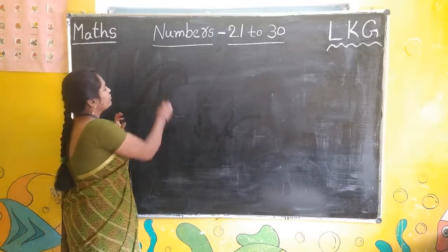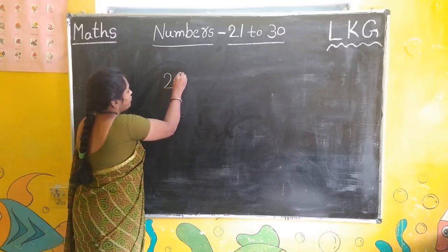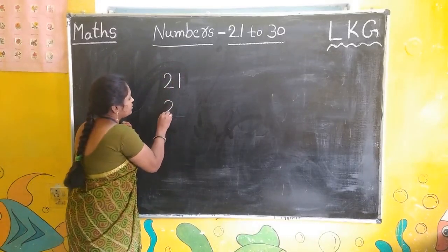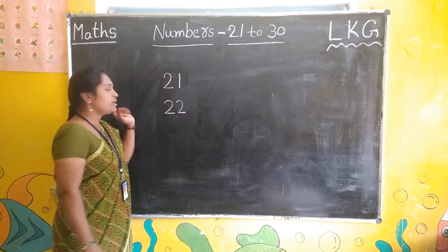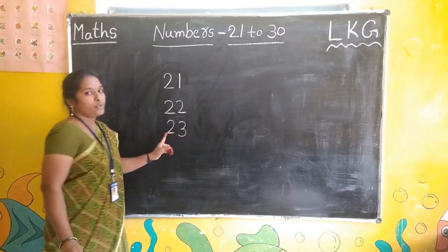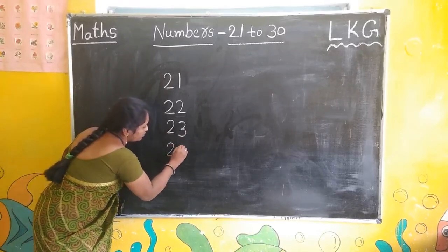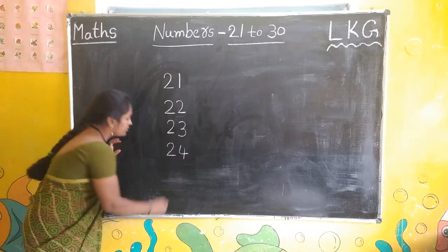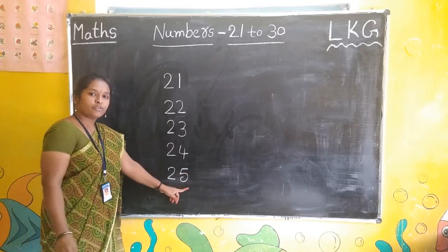Look here, all of you. First you have to write 21. Next: 22, 23, 24, 25. Let us write each number digit by digit — two-one is 21, two-two is 22, two-three is 23, two-four is 24, two-five is 25.